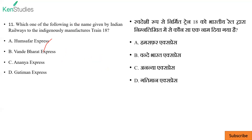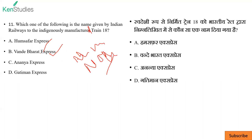Next: which one of the following is the name given by Indian Railway to the indigenously manufactured Train 18? तो यह Vande Bharat है — पहला Vande Bharat New Delhi से Varanasi चला, और दूसरा Vande Bharat New Delhi से Jammu. तो answer B है।